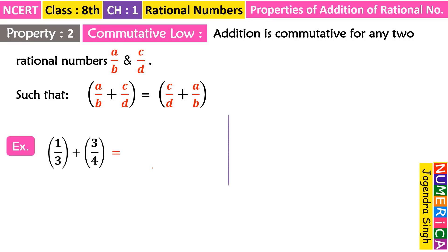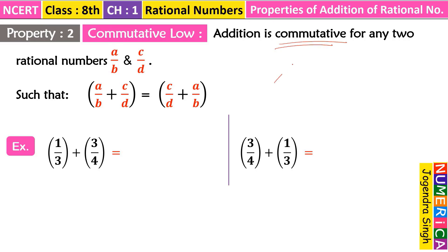An example is 1/3 + 3/4 and then 3/4 + 1/3. The word 'commute' means to shift from one place to another. That means this is the commutative quality — you exchange or swap the order of the numbers.